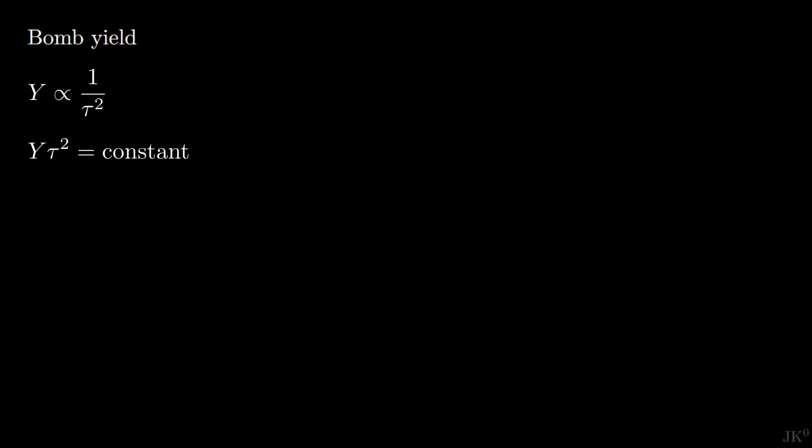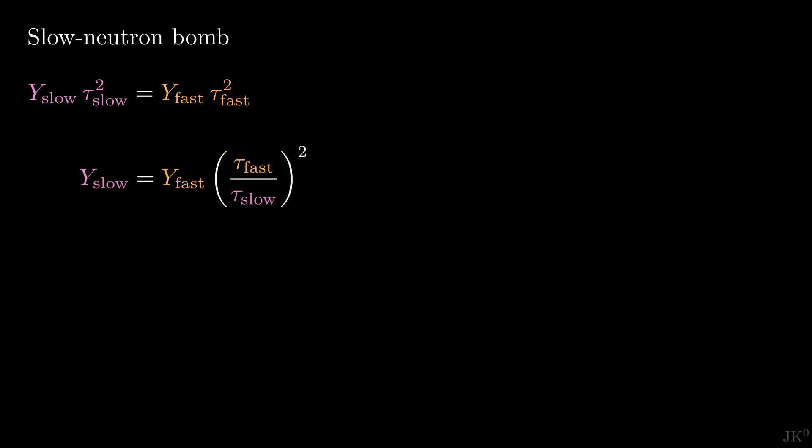Therefore, we can mathematically relate the yield and the characteristic time for slow and fast neutrons in the following way. Solving for the yield of our slow neutron bomb, we find it to be equal to the yield of the equivalent bomb using fast neutrons times the square of the ratio between the characteristic times.